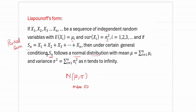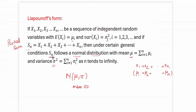The mean of Sn is the addition of all the individual means of the n random variables. So if x1 has mean mu_1, x2 has mean mu_2, up to xn with mean mu_n, then Sn has mean equal to the sum of all those means. Similarly, the variance of Sn is the addition of all the individual variances. This holds as n tends to infinity — that is, as the number of independent random variables becomes very large. This is the Lyapunov form of the Central Limit Theorem.